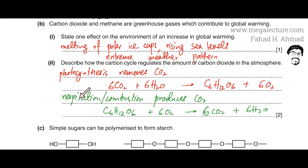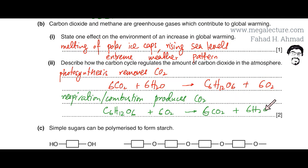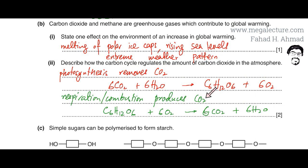On the other hand, respiration by animals produces carbon dioxide and water — this is the opposite of photosynthesis. Animals respire: they produce energy as glucose reacts with oxygen to produce carbon dioxide and water. So respiration is the reaction that adds carbon dioxide back into the atmosphere.